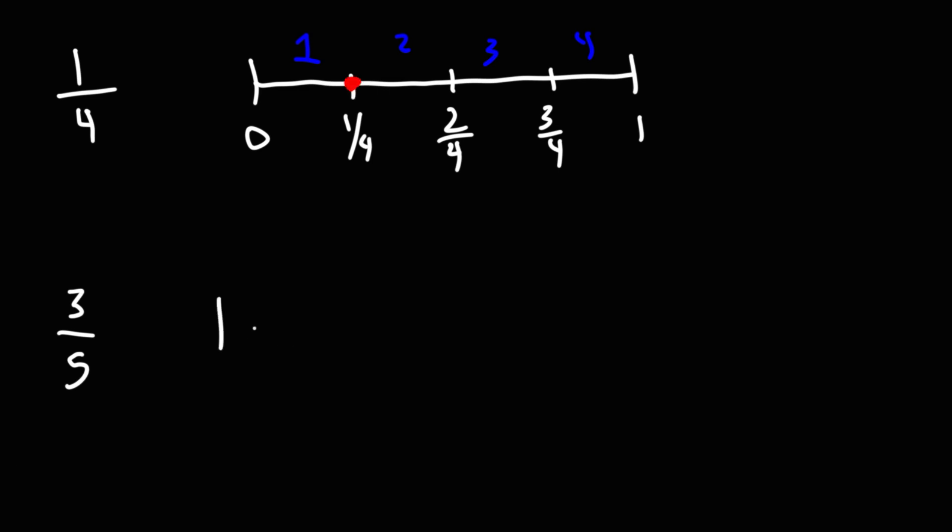Now, for 3 over 5, let's create a number line from 0 to 1 and let's break it up into 5 equal spaces. So we have 1, 2, 3, 4, 5.